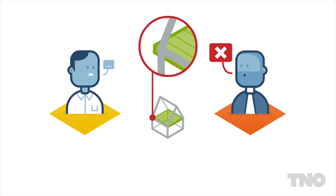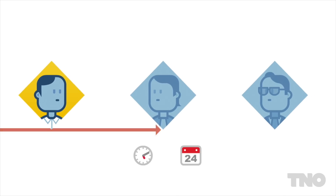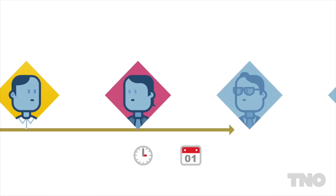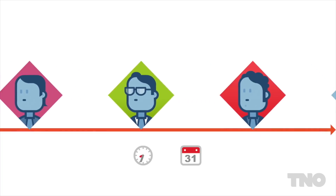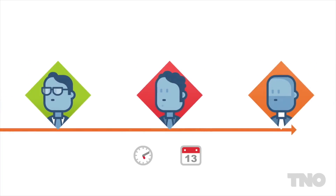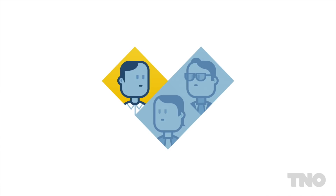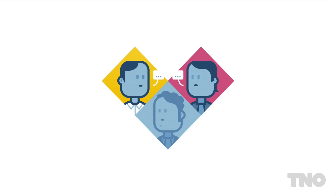Changes are often necessary and those changes may affect other parts of the building, which leads to a new round of coordination between designers, engineers, etc. This example is typical for design and engineering in the fragmented construction industry.